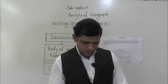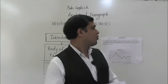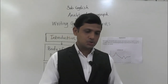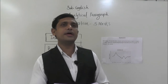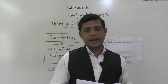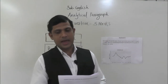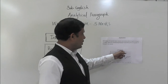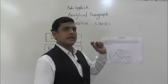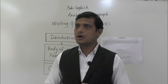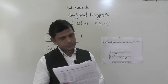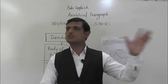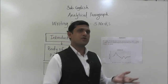Now let us see one example. The question is: the graph given shows estimated sales of gold in Dubai in 2002. Write an analytical paragraph describing the line graph in 150 words. So the introduction would be: 'The line graph depicts the estimated sale of gold in Dubai in 2002.' That one sentence is the introductory line — it tells what is given in this graph: the estimated sale of gold in Dubai in 2002.